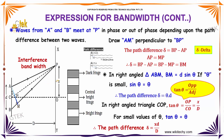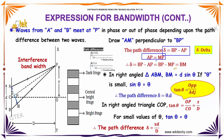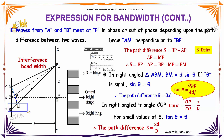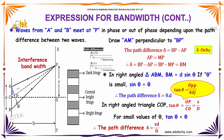The path difference delta is equal to BP minus AP. Since AP is equal to MP, substituting AP equal to MP in the above equation, you get BP minus MP, which is BM. So delta is equal to BM. In right angle triangle ABM, BM is equal to d sin theta.